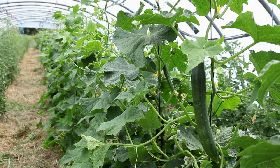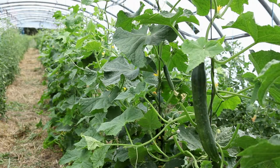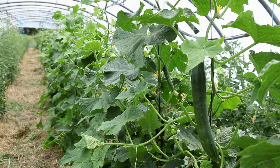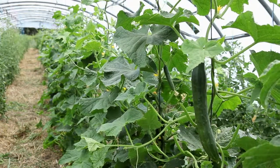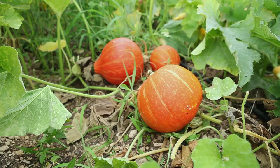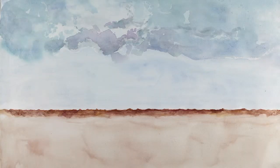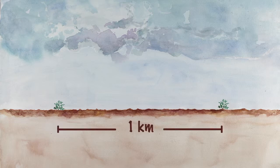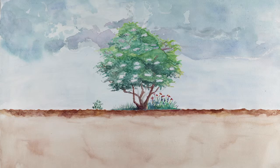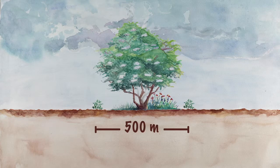All varieties of the Cucumis sativus species cross-pollinate between each other. However, cucumbers do not cross with melons, watermelons or squashes. To avoid cross-pollination, keep a distance of one kilometer between two varieties. You can reduce this distance to 500 meters if there is a natural barrier such as a hedge.